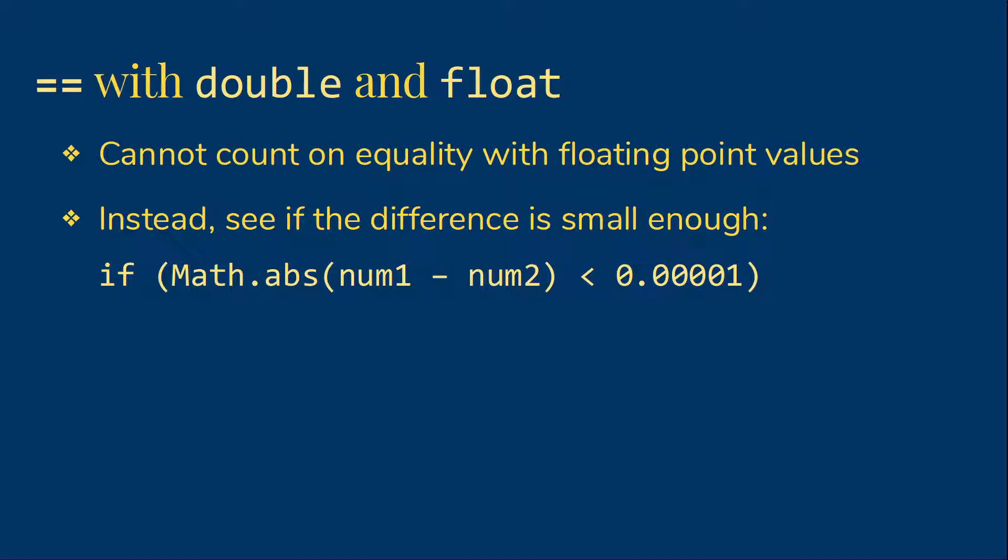So I've just done something fairly generic here. If Math.abs, absolute value, num1 minus num2. So the absolute value means I don't have to know which one of those is bigger. It's less than 0.00001. So that's a small enough number that, for many things, that will work. If you're working with very small numbers, then you're going to need a much smaller number to do this comparison.